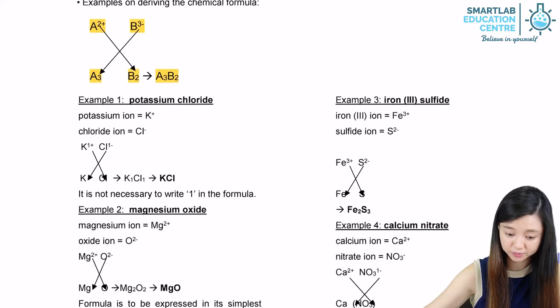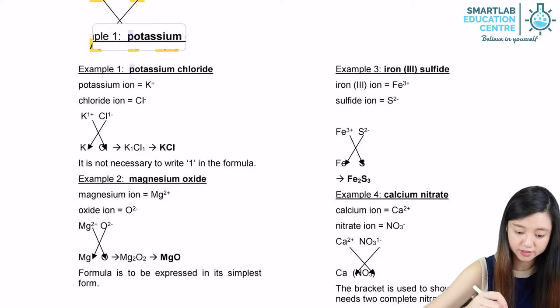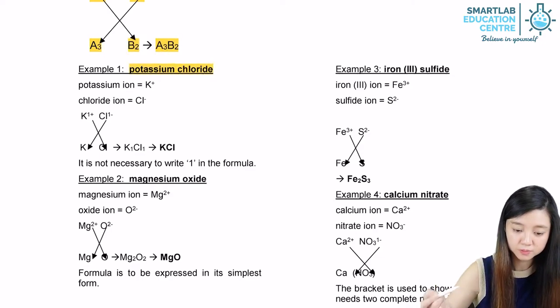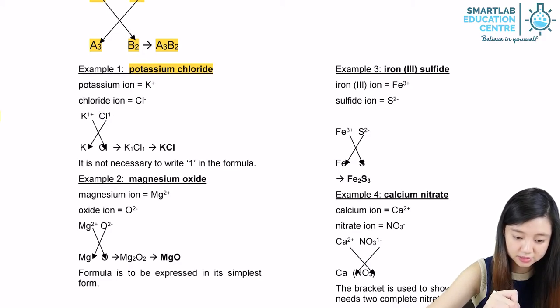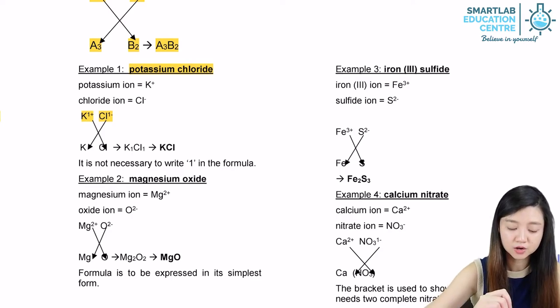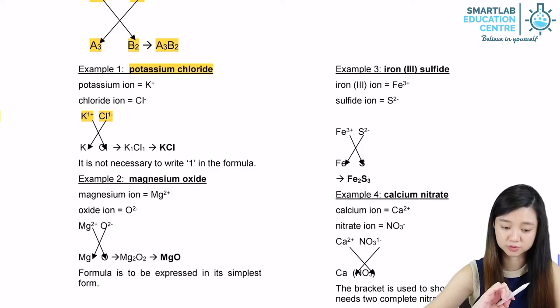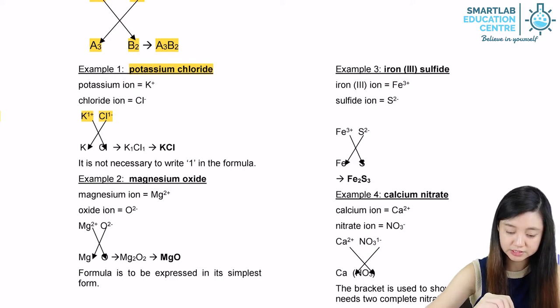Let's look at other examples. We have potassium chloride. Potassium, we know from the periodic table, has a charge of plus 1, K⁺, while chloride has a charge of negative 1, Cl⁻. So firstly, we write down K⁺ and Cl⁻. We do the crisscross method. We bring down K and we bring down the opposite number 1, but 1 we do not need to write down because it's understood that it's already 1. We bring down the whole of Cl, the symbol, and we take the opposite number 1. Therefore, in the end, we will get the chemical formula of KCl.